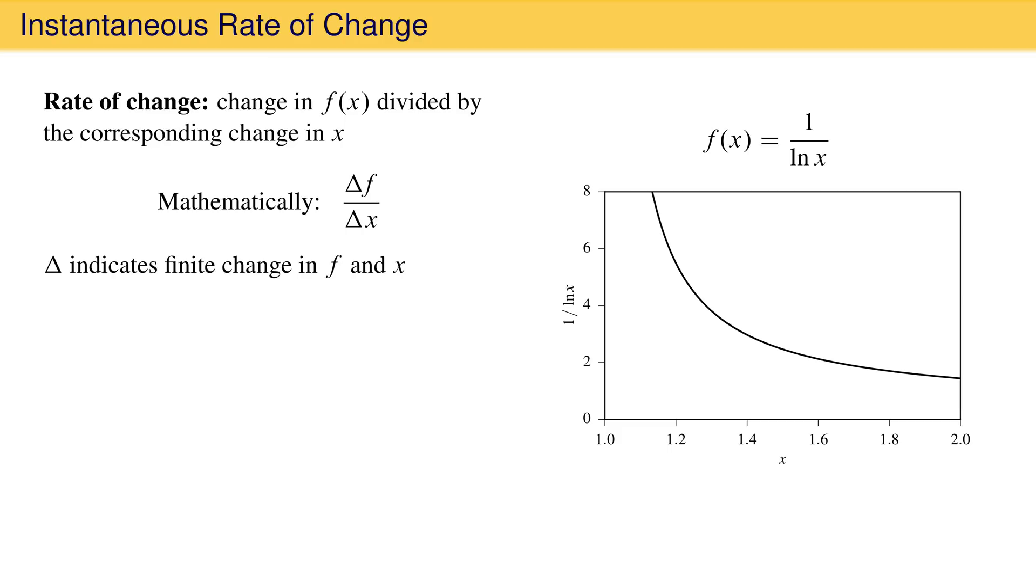To compute delta f and delta x to find the rate of change, we need to select two points. Let's call them point c and point h. Between these two points, the change in x is delta x and the corresponding change in the value of the function is delta f.